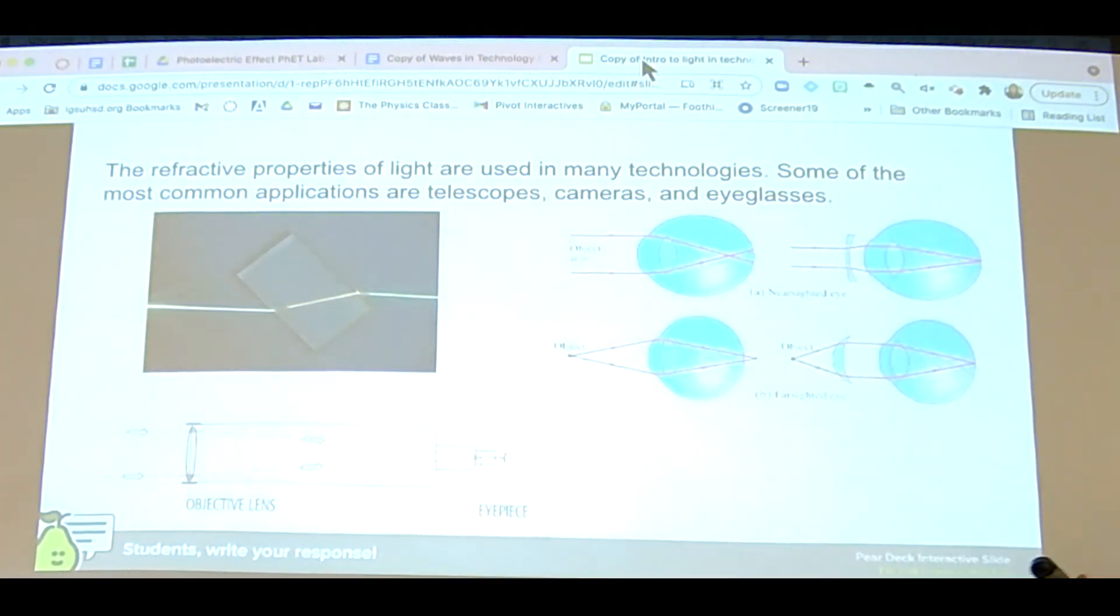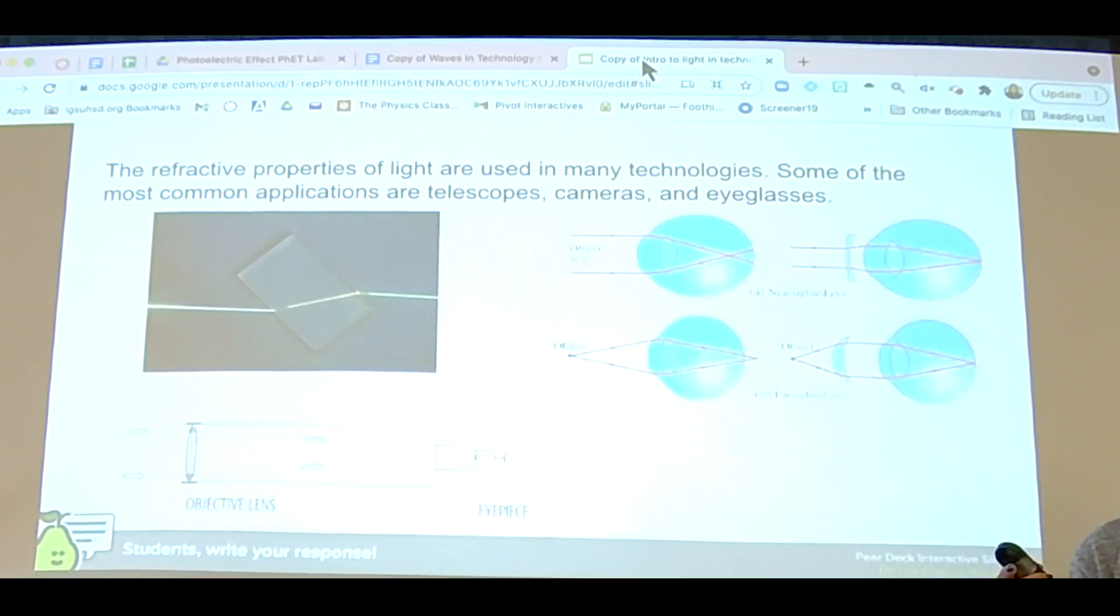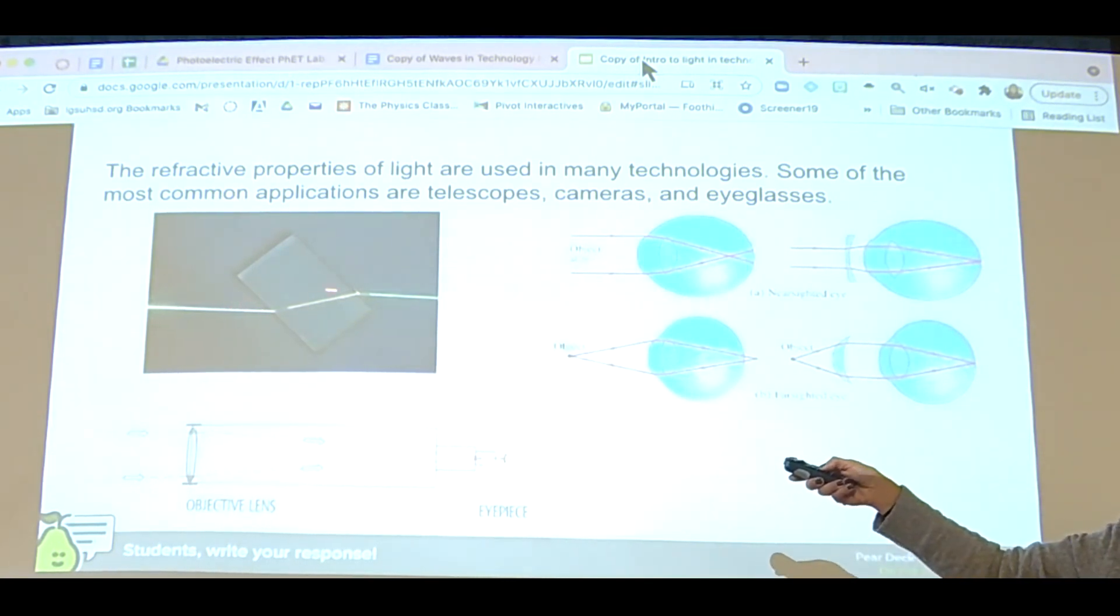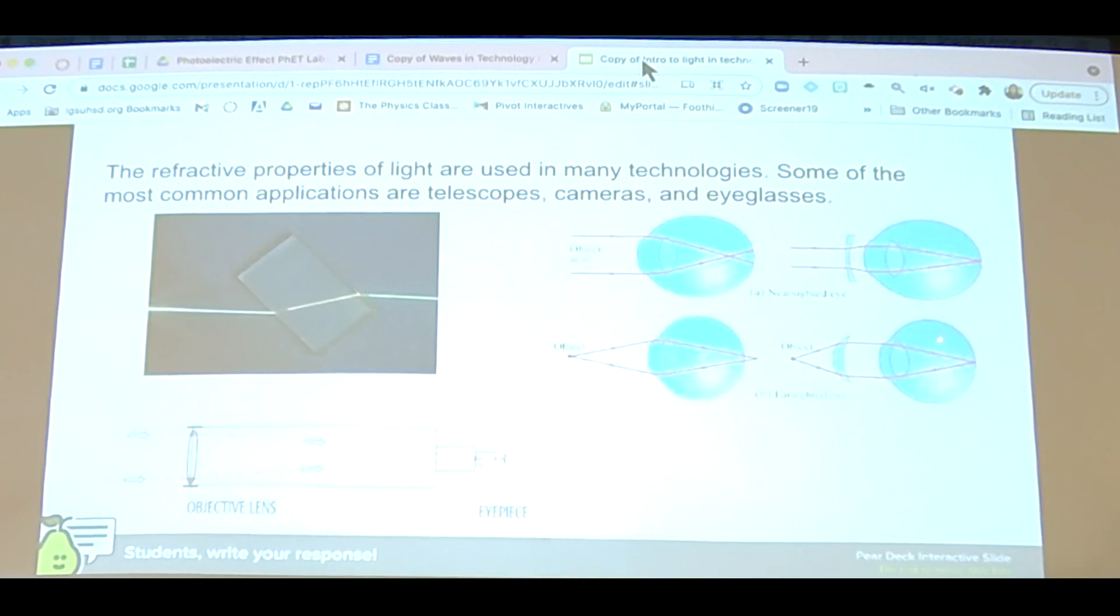Now let's get into lenses. There are many different types of technology where lenses are used. Some of the main physics concepts are wave refraction, which is when light is bent as it goes through different materials. Because remember, waves travel different speeds through different materials, just like I showed you when I shined a laser into a tank of water.